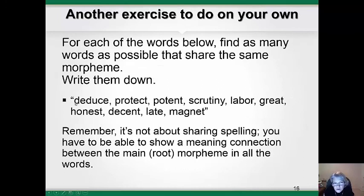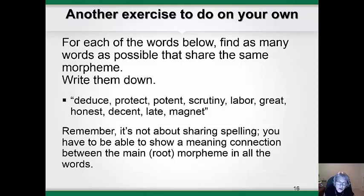Here is an exercise to try on your own. For each of the words in quotation marks, try to find as many words as you can that share the same base morpheme and write them down. Remember, you are not doing a word search — it's not just about shared spelling. For two words to share the morpheme, you need to be able to show a connection between the root morpheme or base morpheme in all of the words. Sometimes it can be tricky. For example, 'decent' and 'decency' are definitely related, but 'decent' and 'recent' are not. However, 'deduce' and 'reduce' are related, even though there's no word D-U-C-E or 'deuce' that can stand on its own.